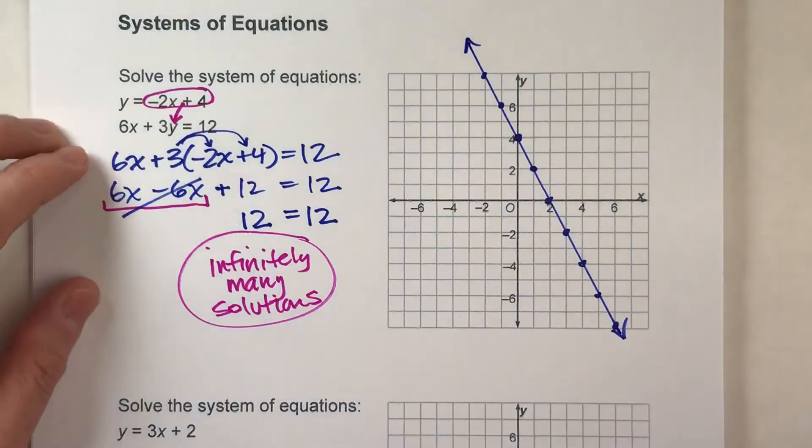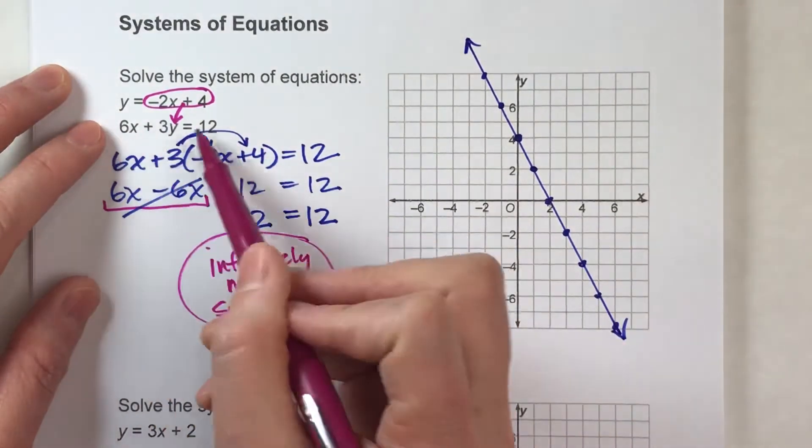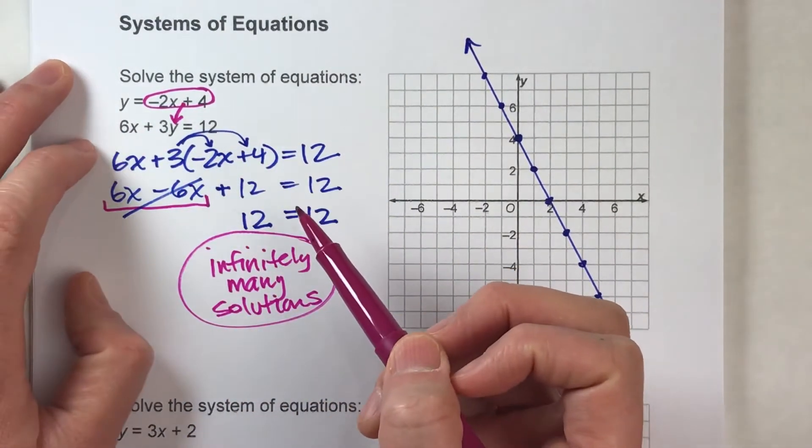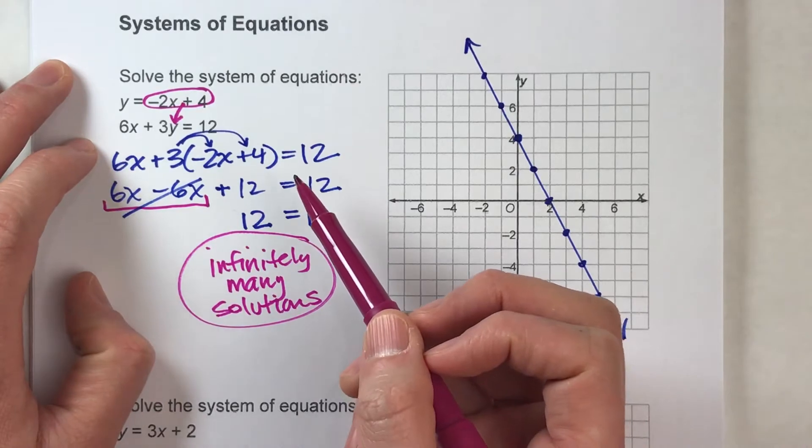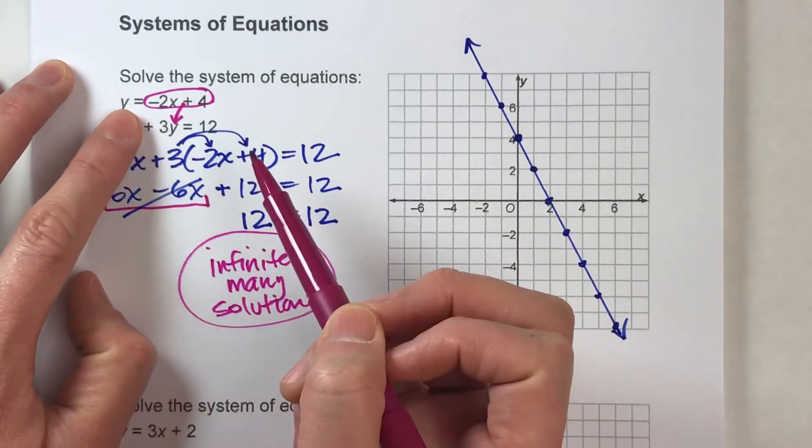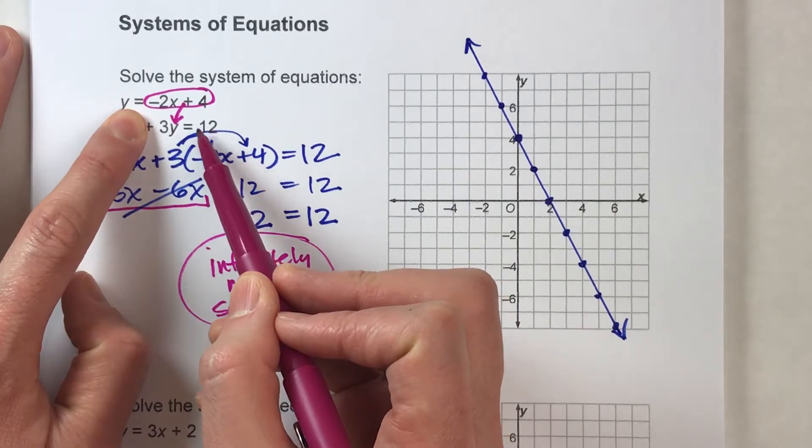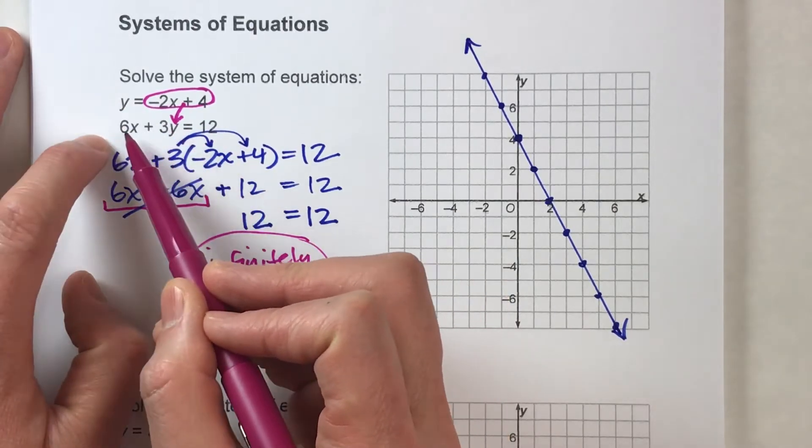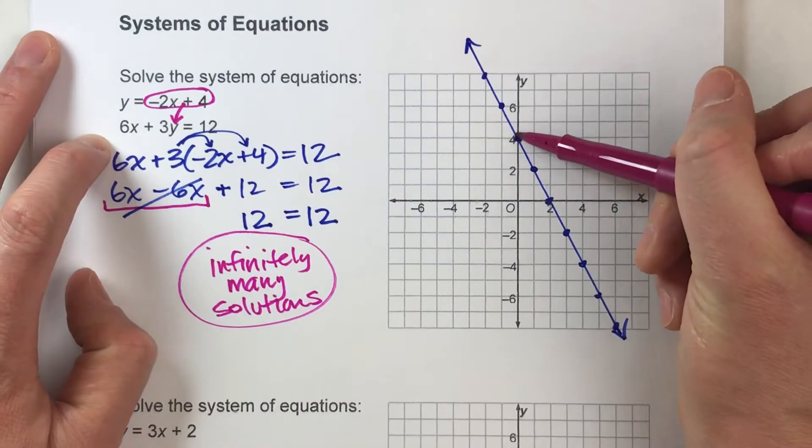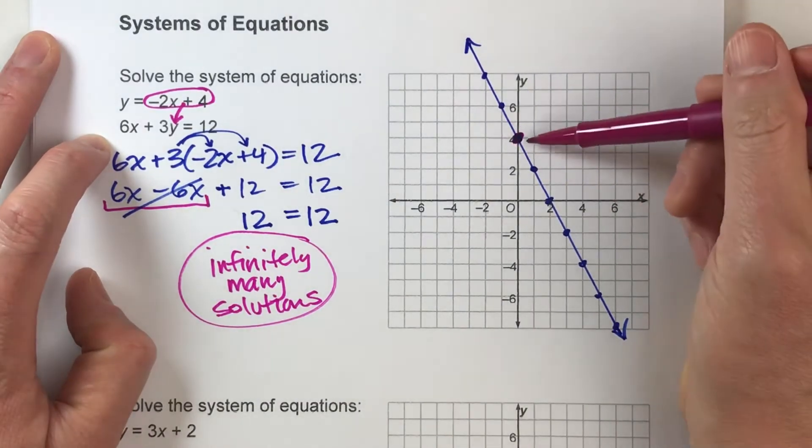Now for my second equation, it's in standard form, so I'm going to graph it by plotting the intercepts. If x is 0, what does y have to be so that 3 times y equals 12? Well, y has to be 4. So the combination 0, 4 is a point on my line. So notice it's also that point.